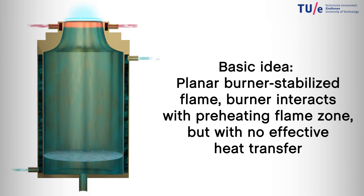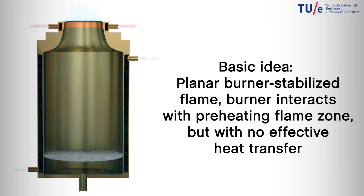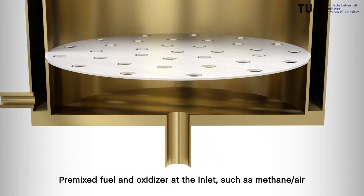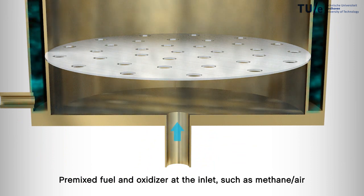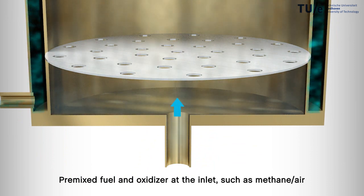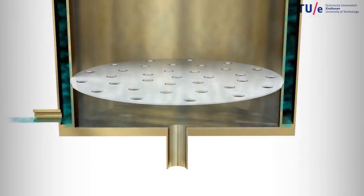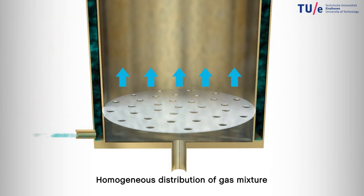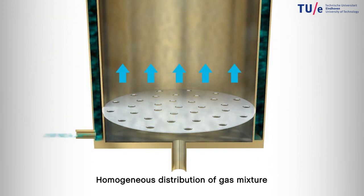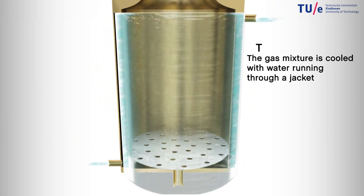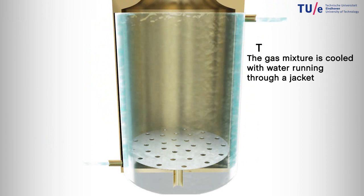The basic idea is a planar burner stabilized flame. The burner interacts with the preheating flame zone but with no effective heat transfer. Pre-mixed fuel and oxidizer at the inlet — such as methane-air — with a homogeneous distribution of the gas mixture. The gas mixture is cooled with water running through a jacket.